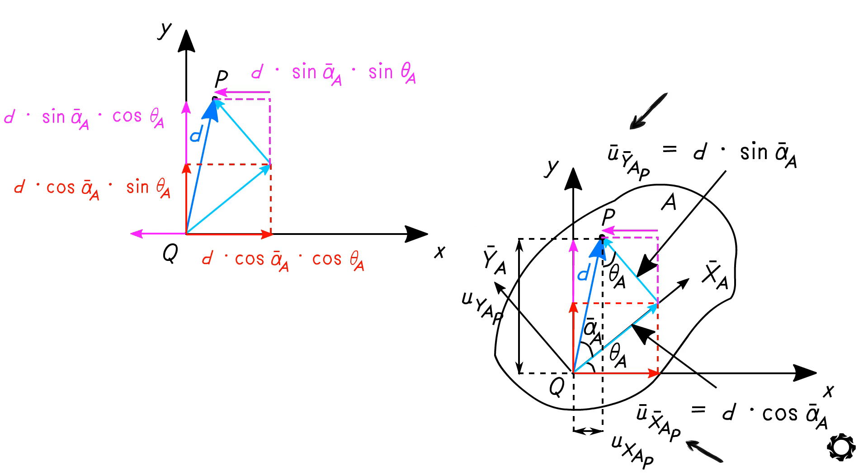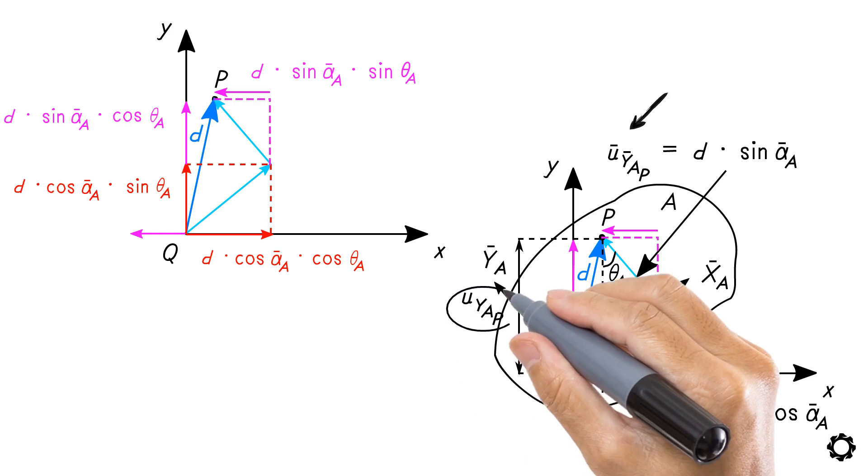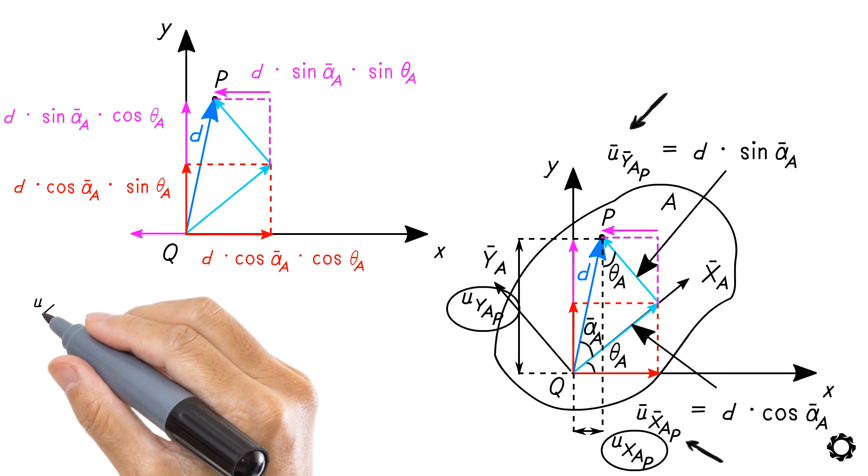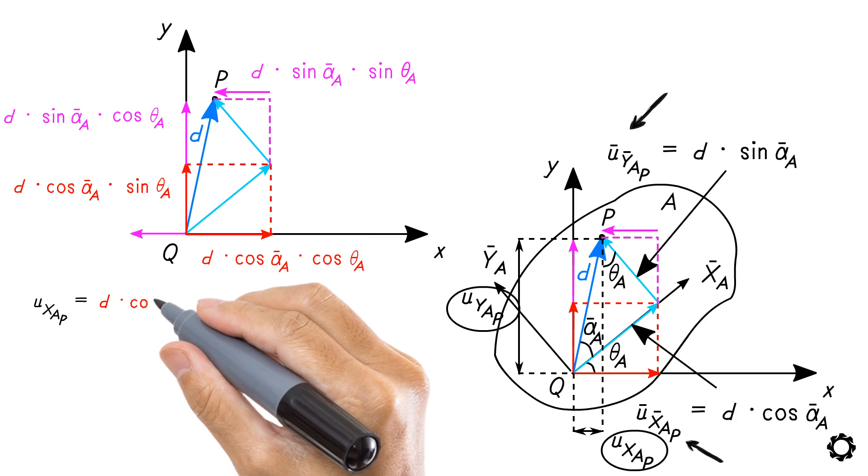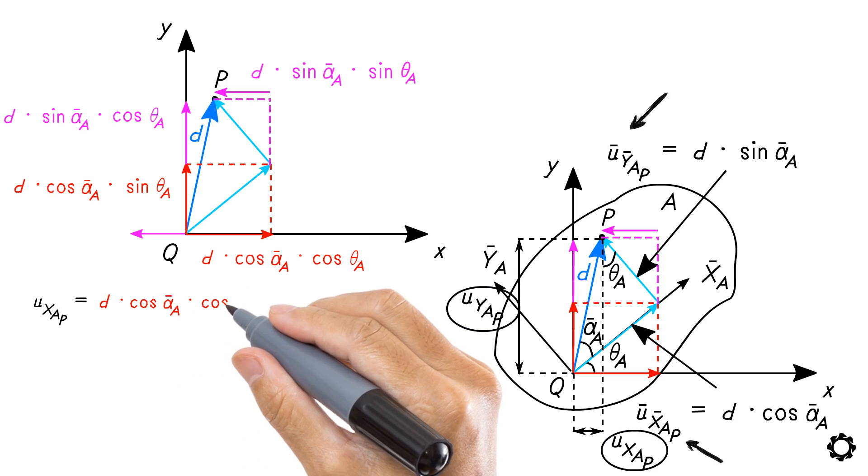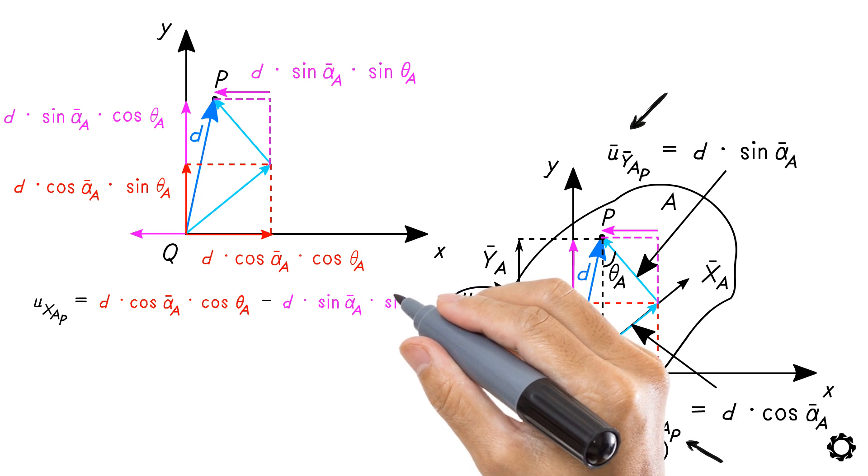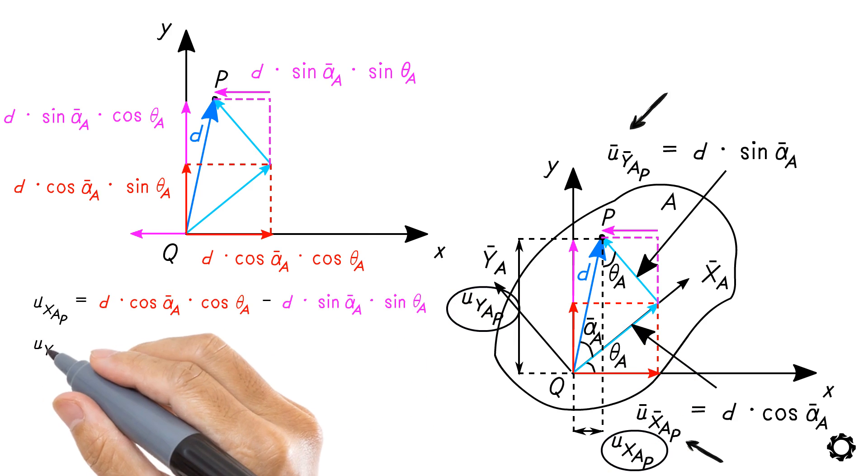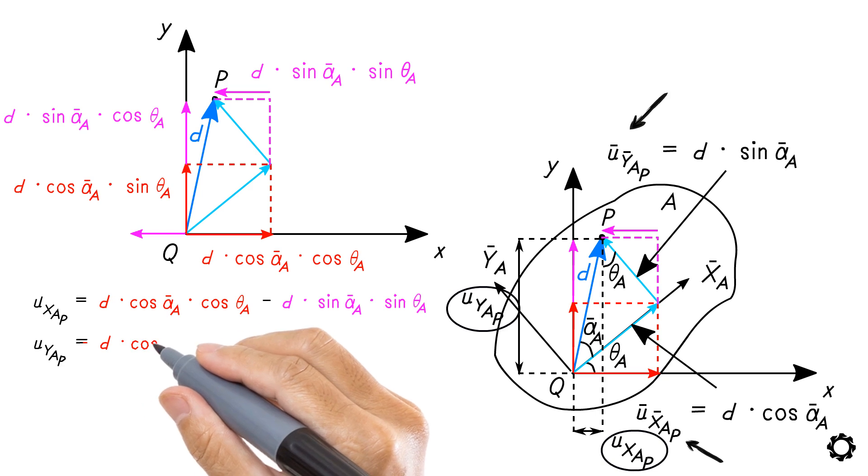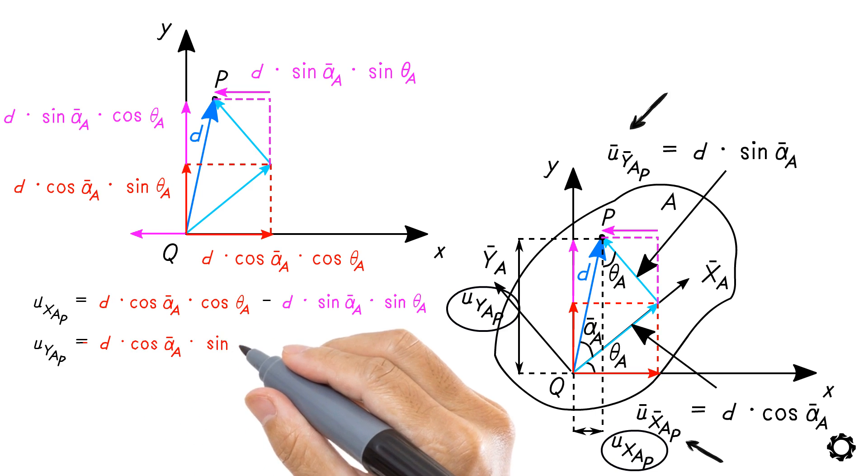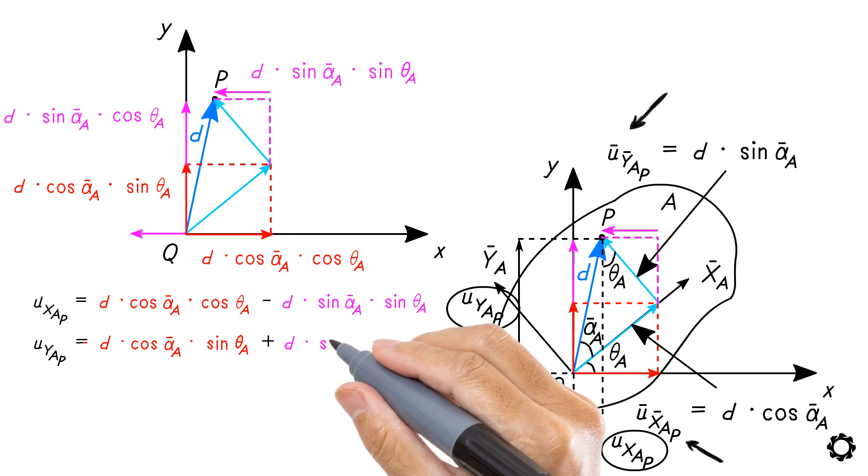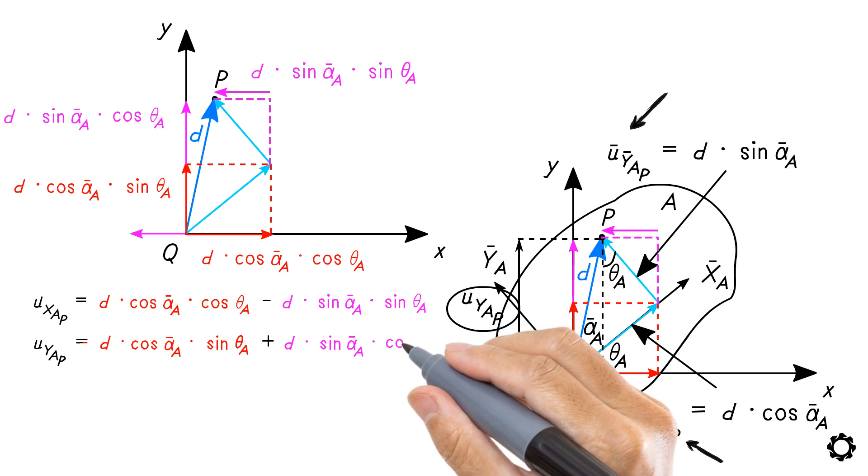Finally, the global components u_x_ap and u_y_ap can be written as u_x_ap equals d·cos(ᾱ_a)·cos(θ_a) plus d·sin(ᾱ_a)·cos(θ_a).